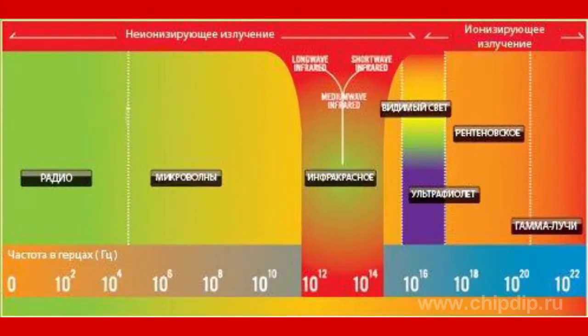According to frequency ranges, there are various types of electromagnetic radiation. There are no abrupt junctions between ranges, sometimes they overlap and their borders are conventional.